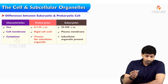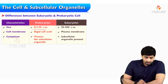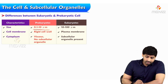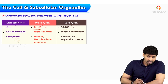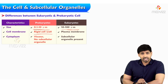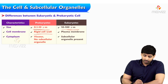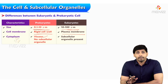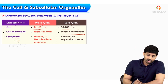The size of the prokaryotic cell is 1 to 10 micrometers, and in eukaryotes the size is much larger — 10 to 100 micrometers. There is no cell membrane in prokaryotes; they have a cell wall. In eukaryotes, there is a rigid cell membrane. The cytoplasm is viscous, and no subcellular organelle is present in prokaryotic cells, but eukaryotes have subcellular organelles.